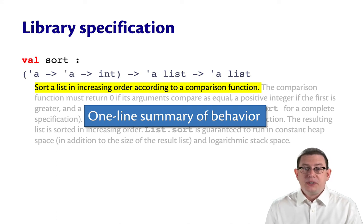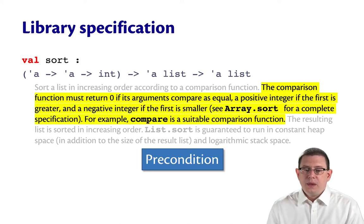Instead, we can just say that it sorts a list. The second line here, although it doesn't begin with requires colon, it is a precondition. It states something that must be true about one of the inputs provided to the sort function, which is the compare function that is passed in.